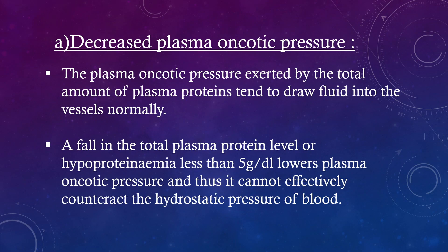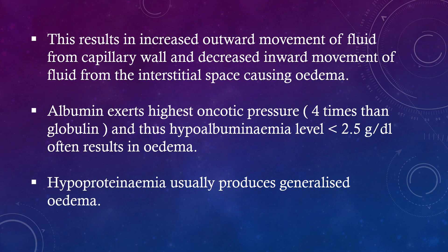Decreased plasma oncotic pressure. The plasma oncotic pressure exerted by the total amount of plasma proteins normally tends to draw fluid into the vessels. A fall in the total plasma protein level — hypoproteinemia less than 5 g/dL — lowers plasma oncotic pressure and thus it cannot effectively counteract the hydrostatic pressure of blood. This results in increased outward movement of fluid from the capillary wall and decreased inward movement of fluid from the interstitial space, causing edema. Albumin exerts the highest oncotic pressure — four times that of globulin — and thus hypoalbuminemia at a level less than 2.5 g/dL often results in edema. Hypoproteinemia usually produces generalized edema.